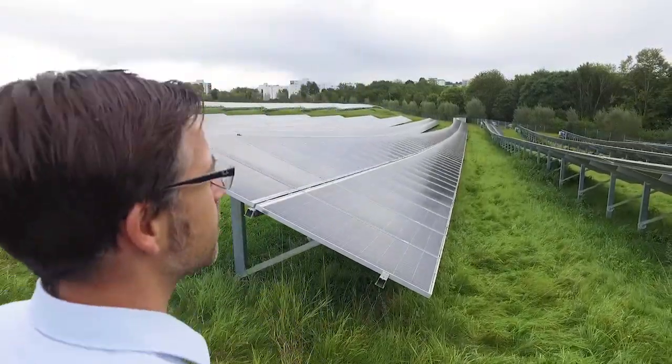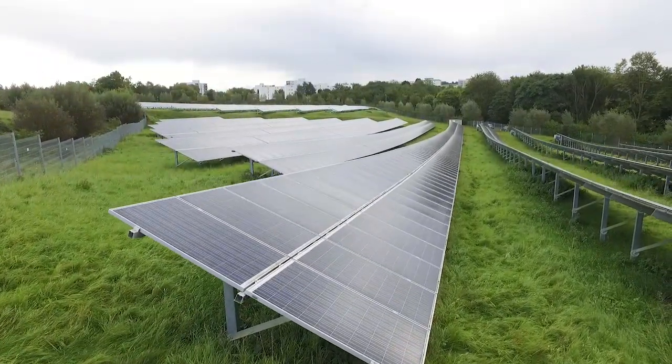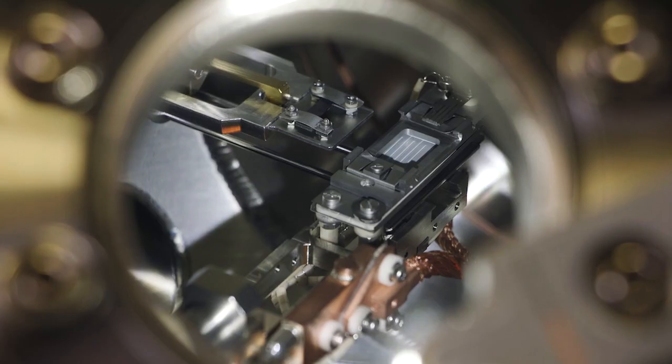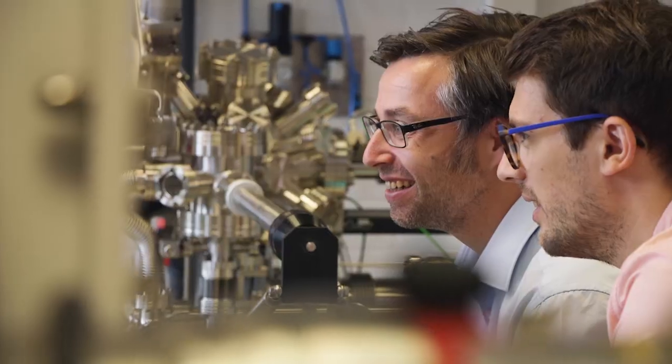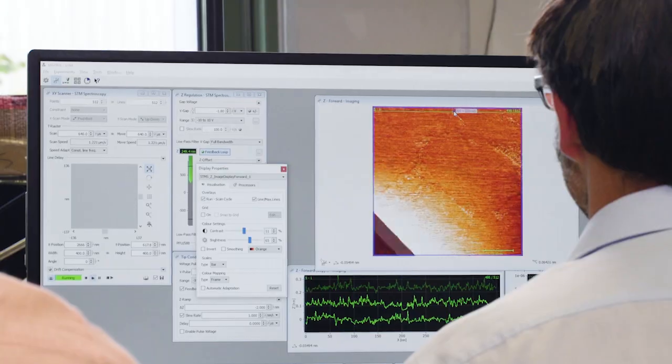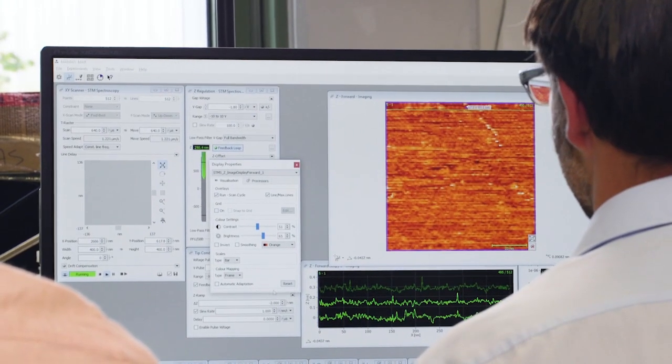If you want to make good solar cells, then you need to manufacture the material very, very accurately down to the nanometer scale. And that's my vision essentially, to make big modules better by looking at very small scales.